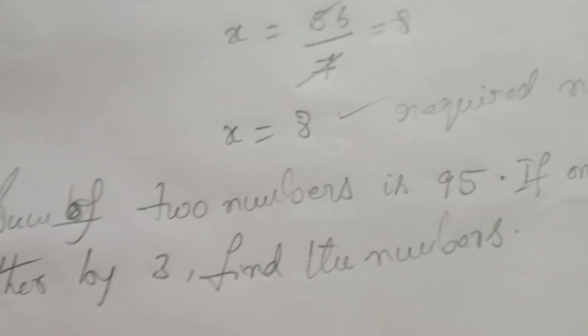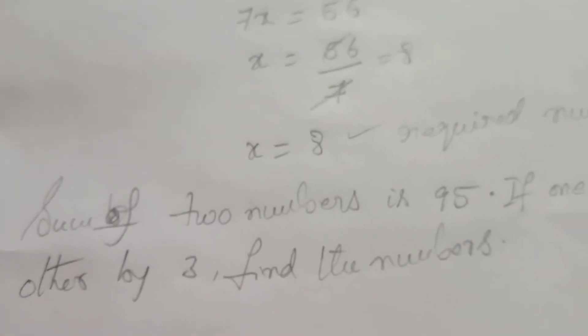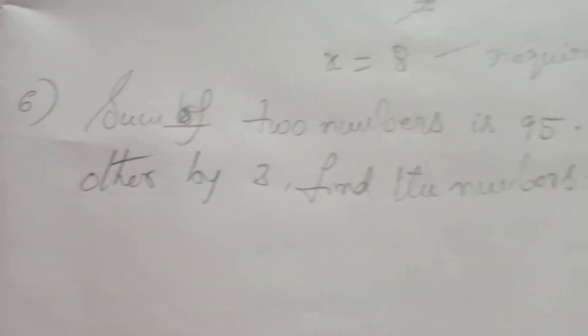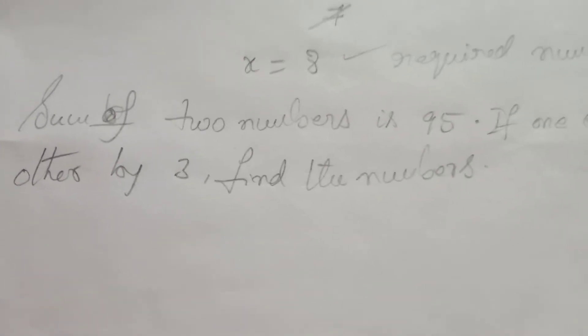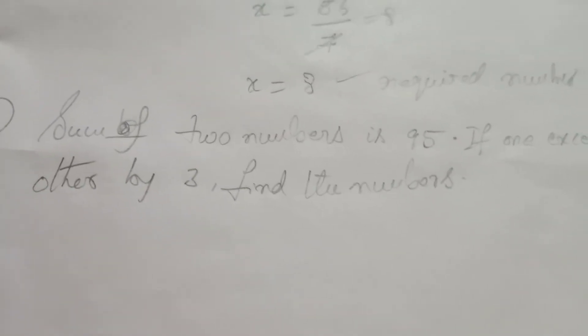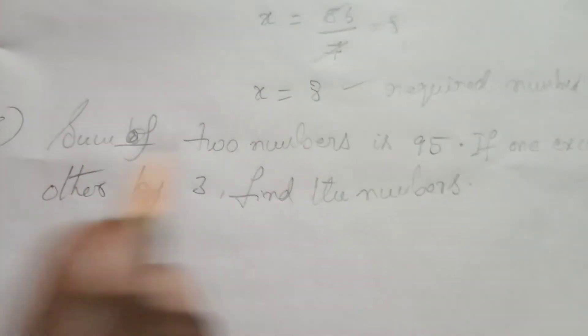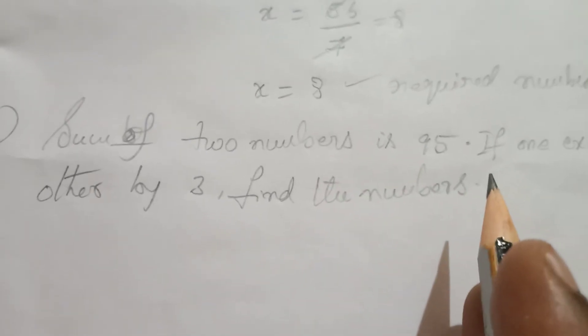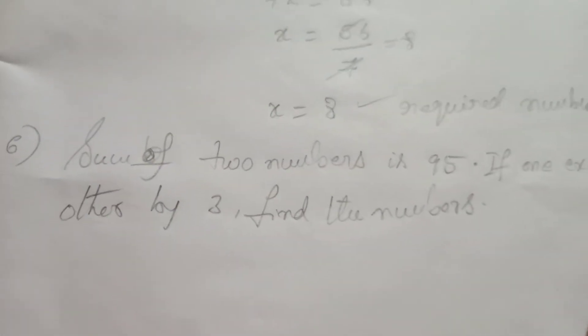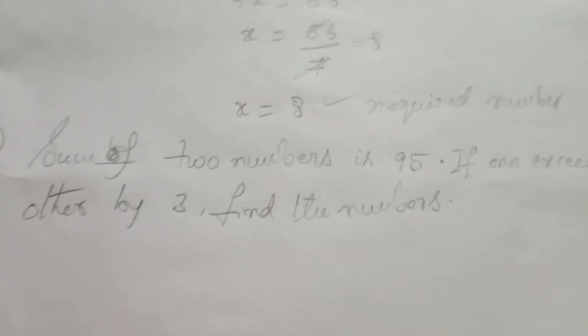Sixth problem. Sum of two numbers is 95. If one exceeds the other by 3, this number is 3 extra. Find the numbers.